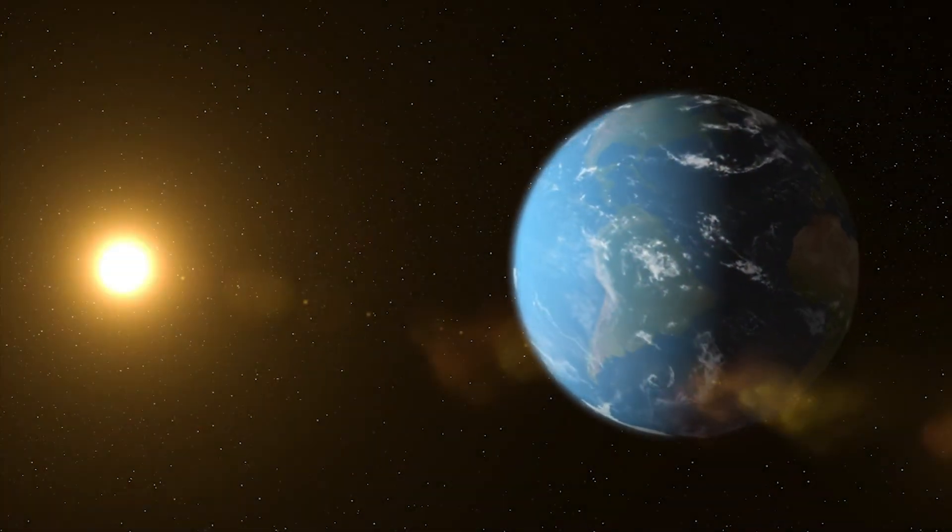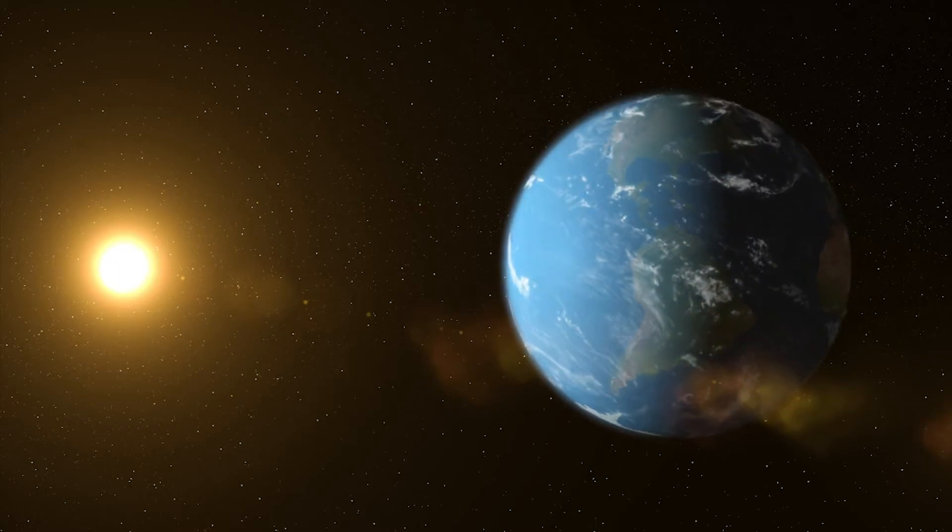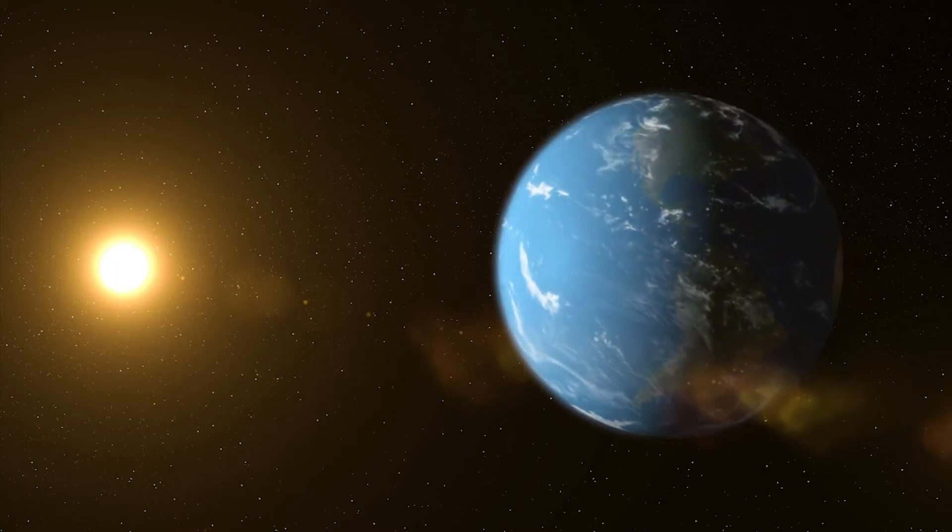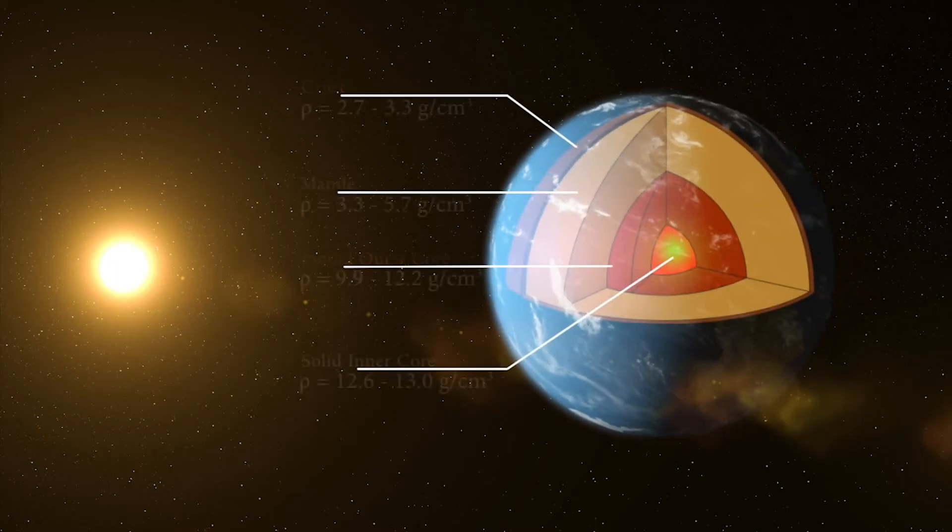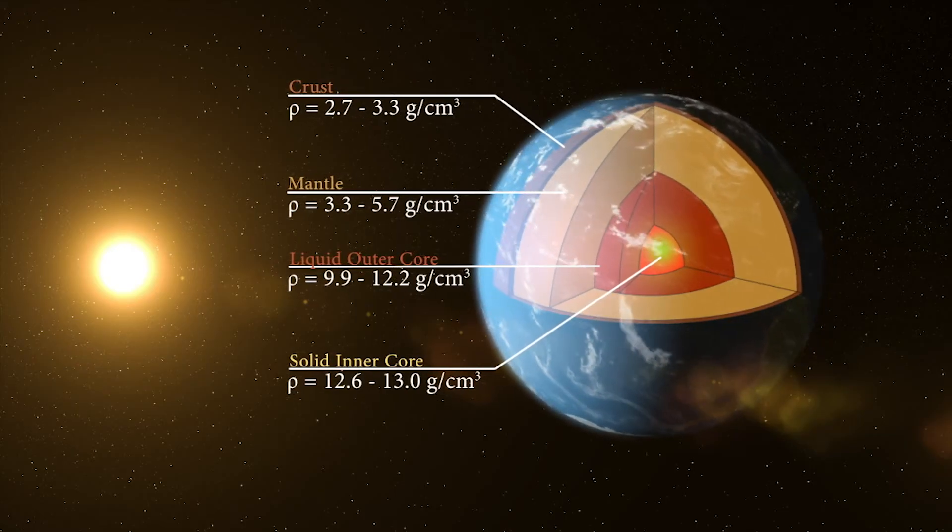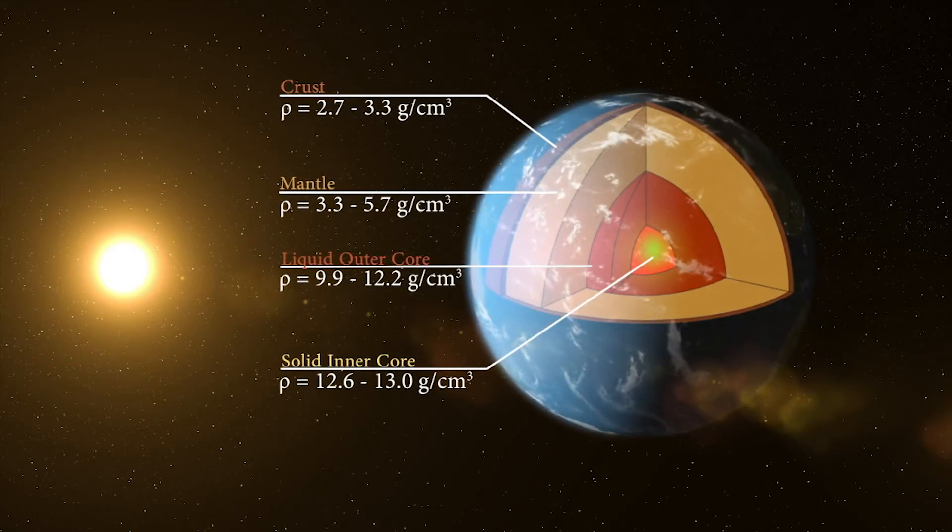This video will focus on the process of differentiation, the separation of materials according to density. From known values of Earth's mass and radius, we can calculate an average density of 5.5 grams per centimeter cubed.